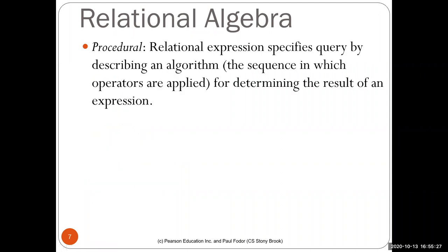Relational algebra is procedural: once the query optimizer finds the most efficient equivalent expression, it is executed like an algorithm. We apply inner operators first on inner relations, then apply the next operators on the resulting relations. You determine the result by applying the innermost operators on the inner expressions and filtering out the final result from intermediate results.